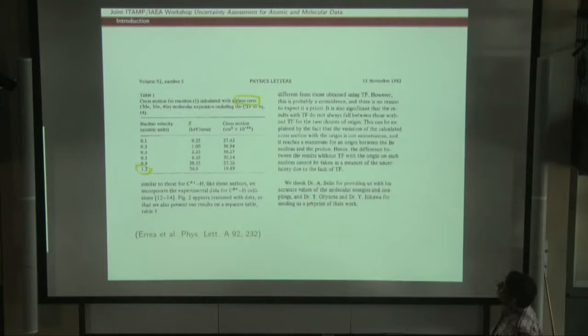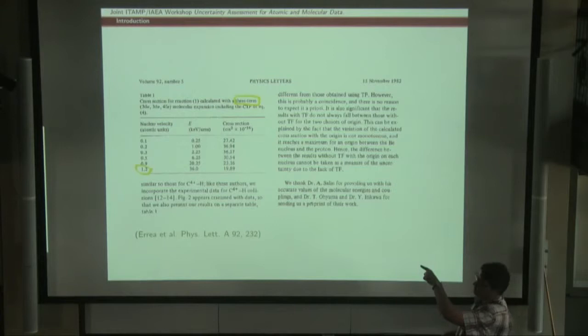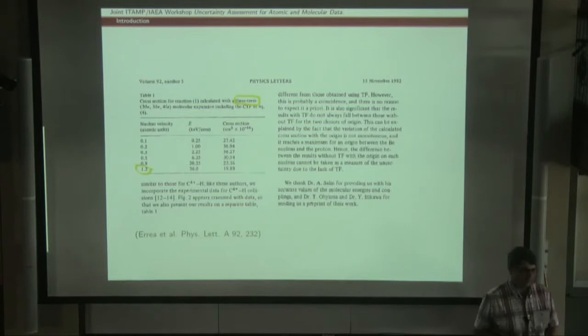This is an old paper we wrote in 1982. We calculated charge exchange cross sections for Be4+ on hydrogen. The calculation includes only three molecular states, but we were so brave that we gave numerical results, and also produced results for an energy as high as 36 keV, that means a velocity of 1.2 atomic units. I must say that the results are not so bad. But this is the kind of calculation we were doing at that time.